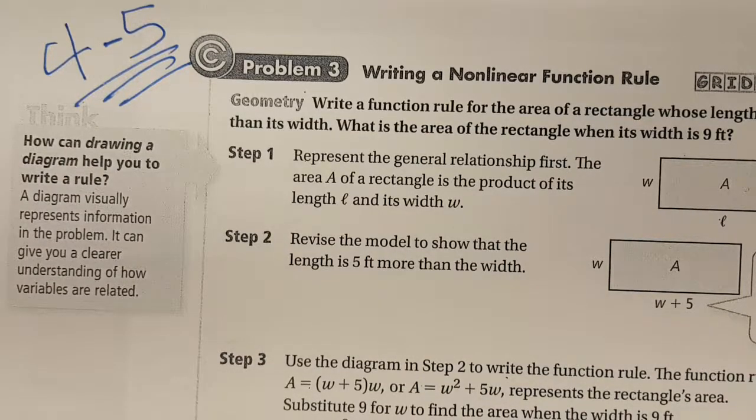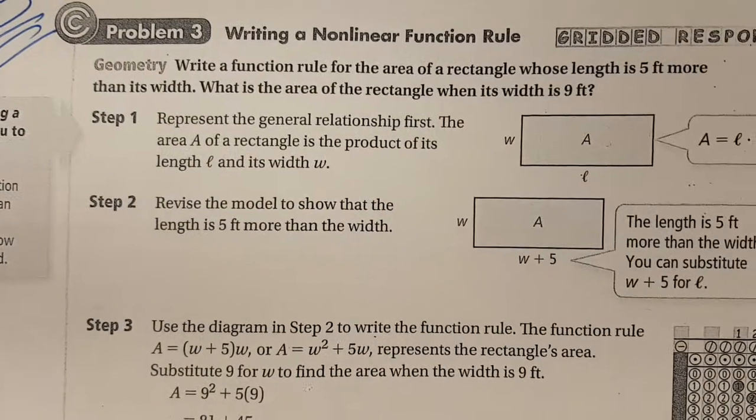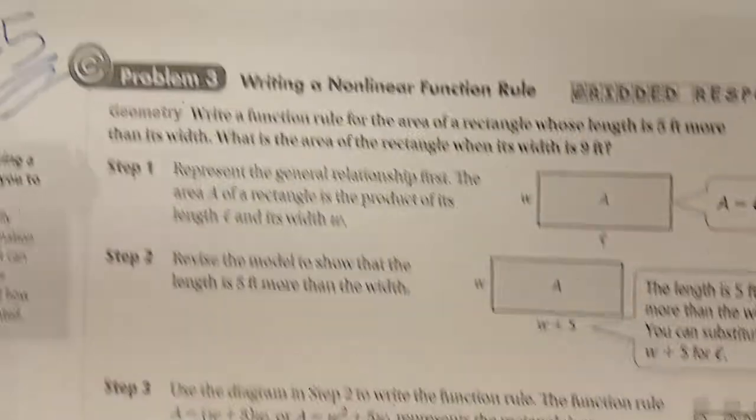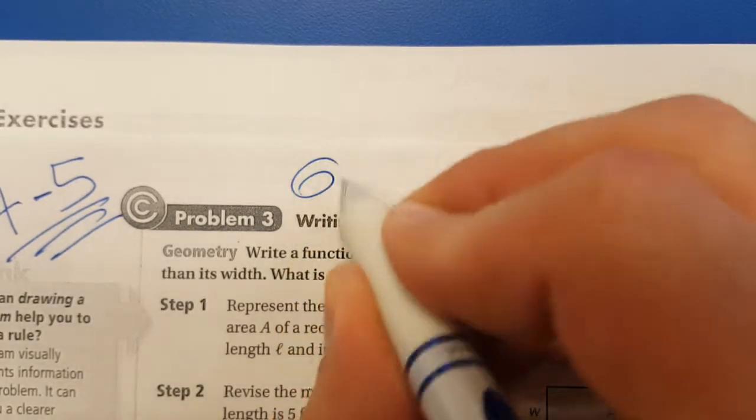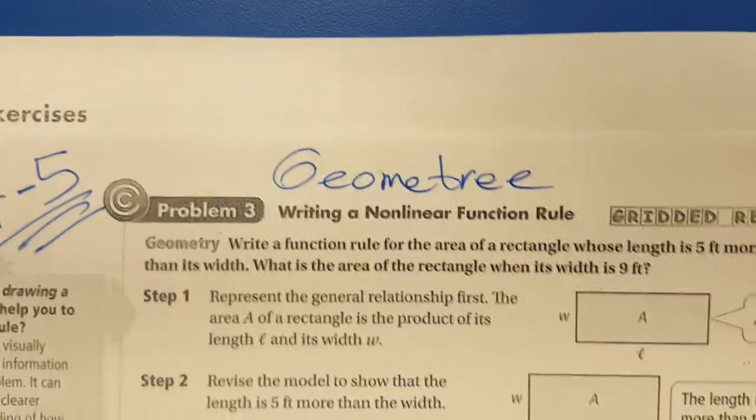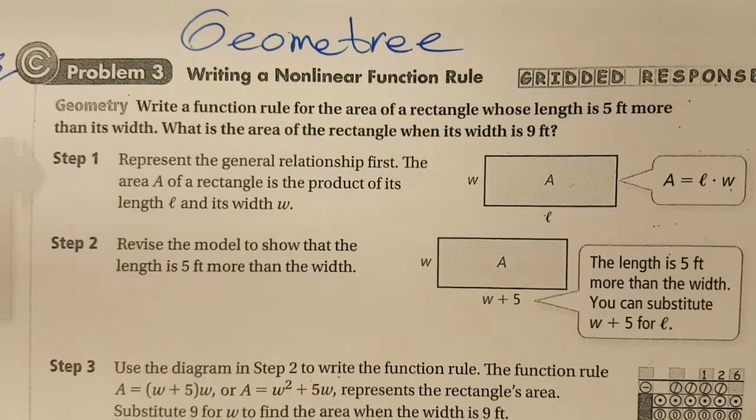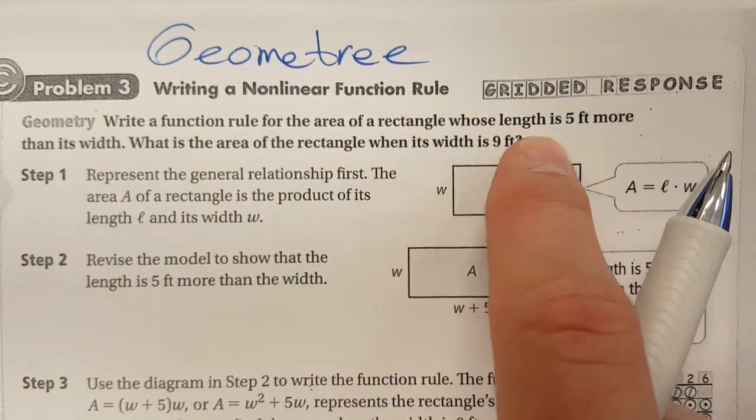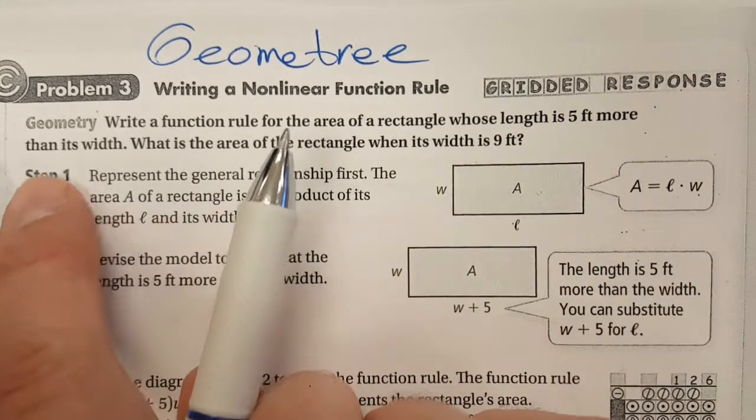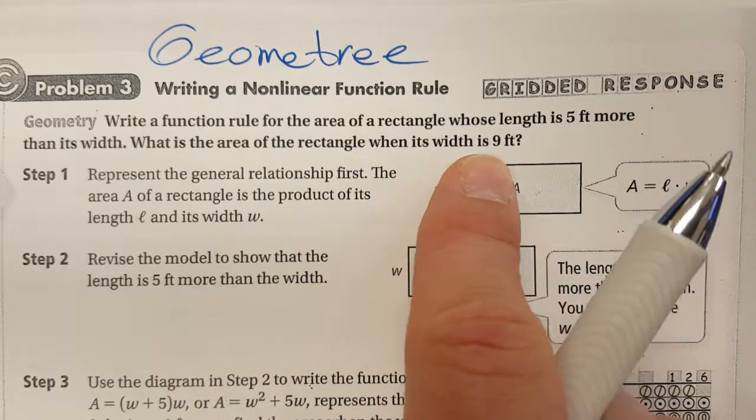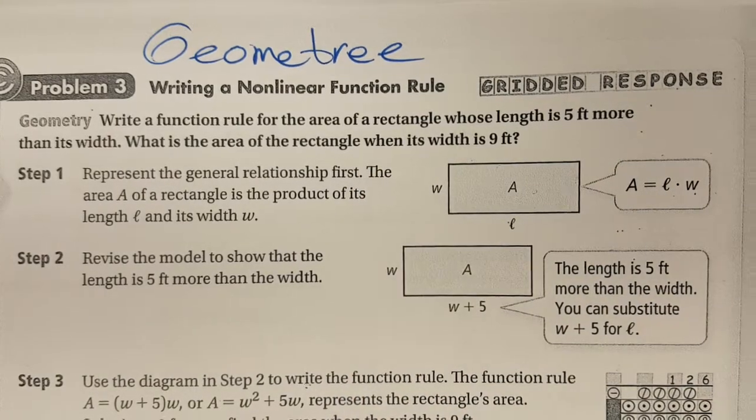Alright, we're finishing off section 4.5 with problem number three. This is a good one, really going to lead into some geometry situations. Here we go. Write a function rule for the area of a rectangle whose length is 5 feet more than its width. What is the area of a rectangle when its width is 9 feet? This is a good one.